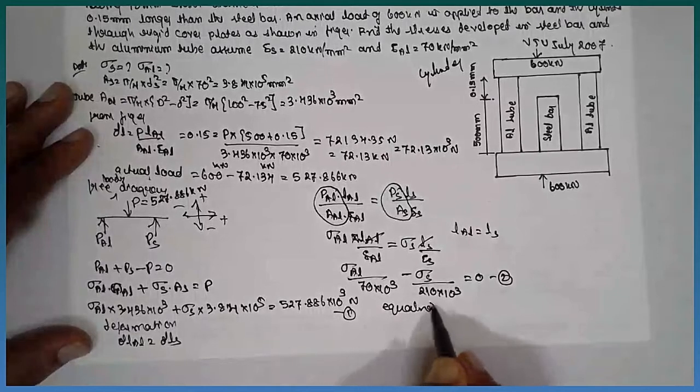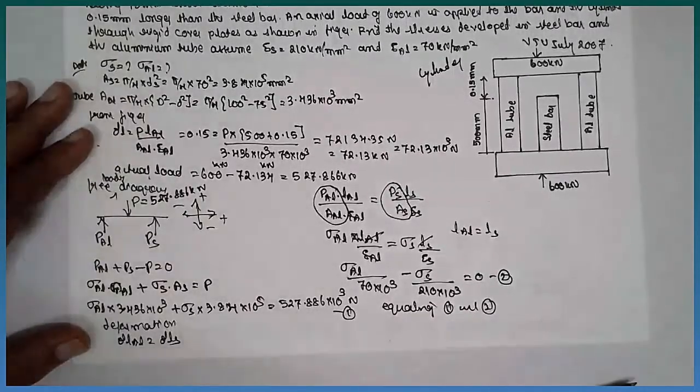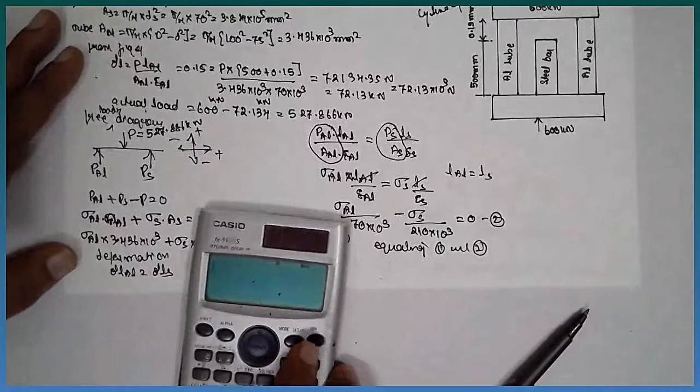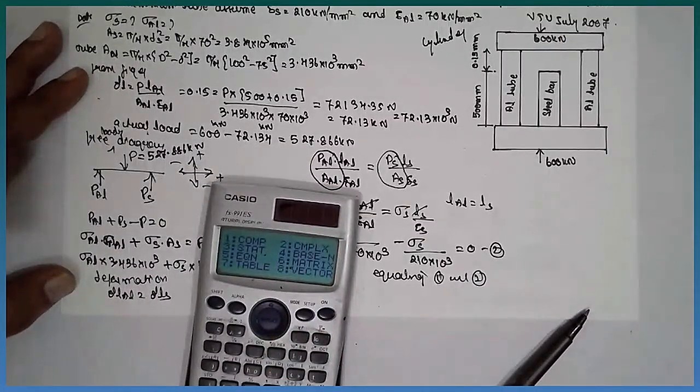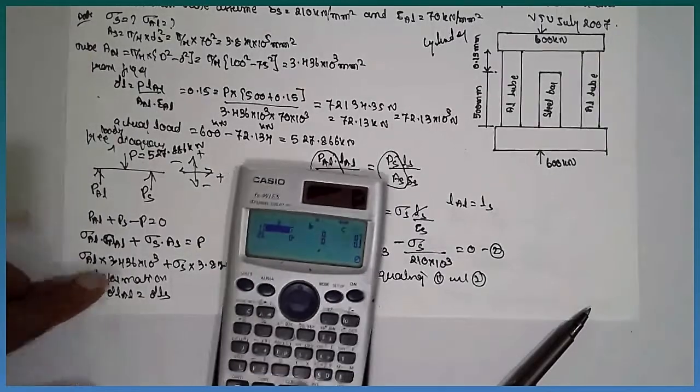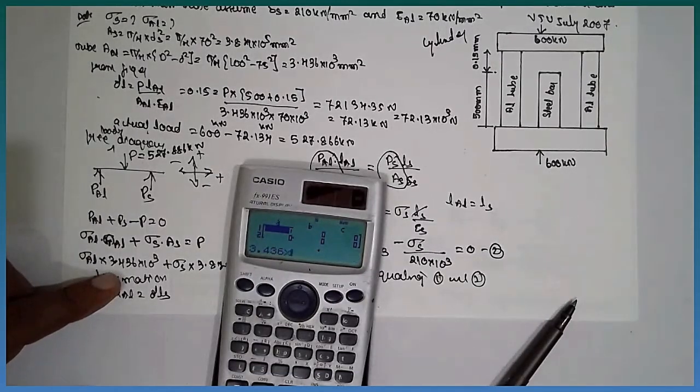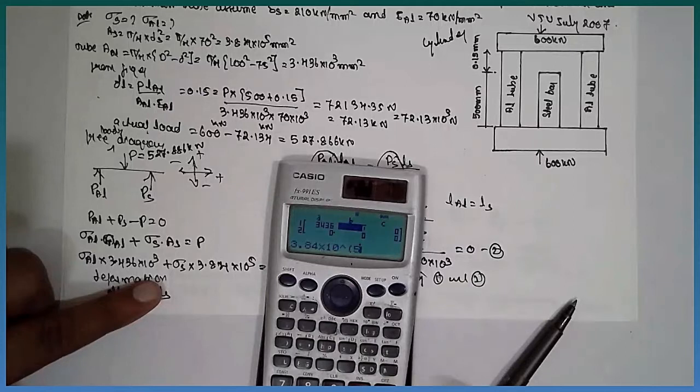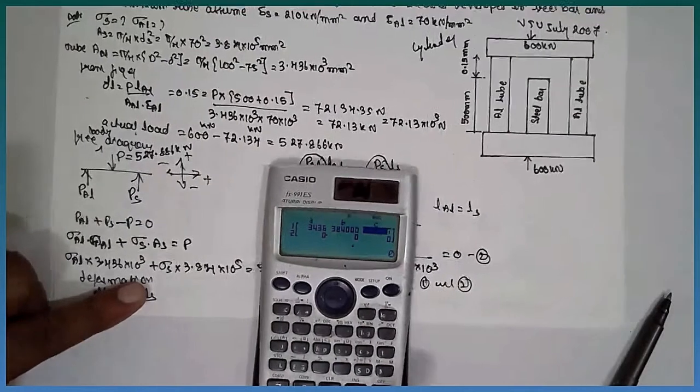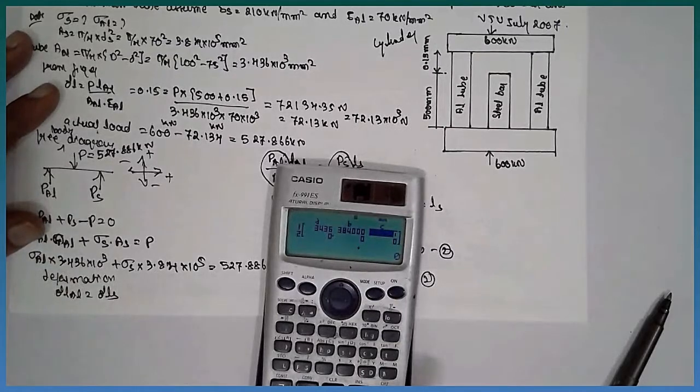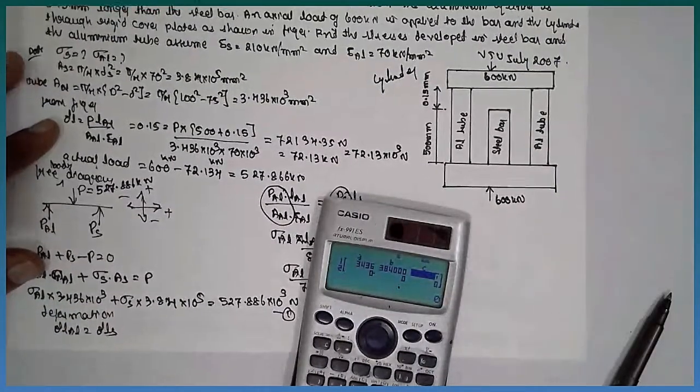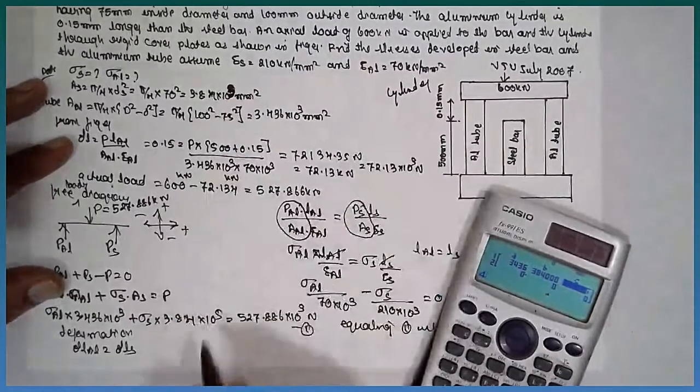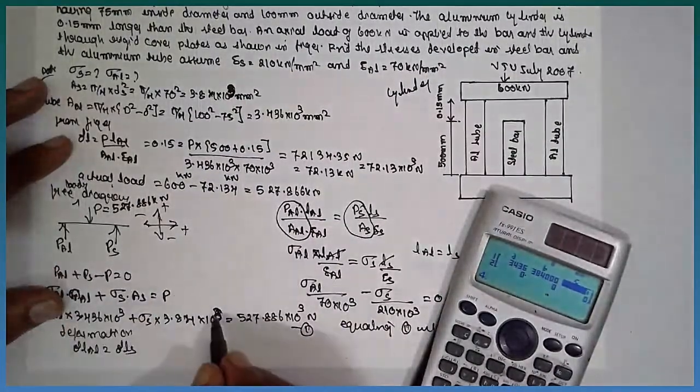Equating 1 and 2, you will get the answer. 3.436 into 10 raise to 3. I made a mistake here, it is 10 raise to 3, but this is 10 raise to 3 and this is also 10 raise to 3.